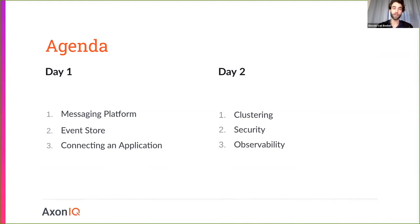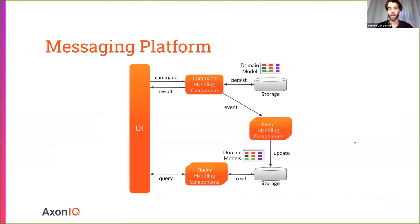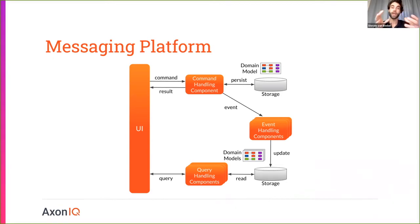The first thing to cover is the messaging platform, really with the nice tagline: dumb pipes and smart endpoints. That's what we aim for, and that's what we're going to explain as well. I'm first going to cover a pretty small, concise diagram. For those who have attended earlier trainings or have been looking at our online material, you might recognize this diagram as a very simplified means of showing CQRS, domain-driven design, and event sourcing in one picture.